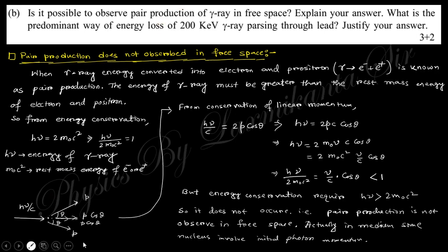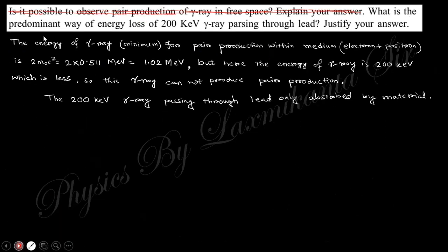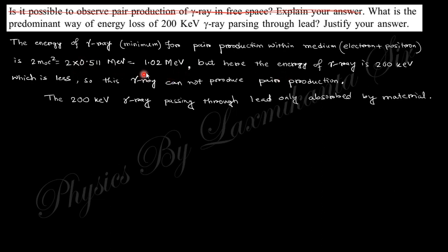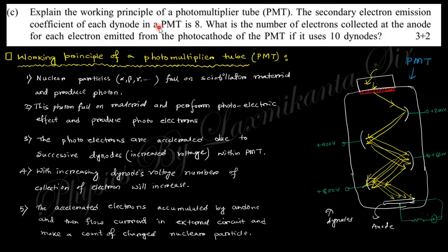The next part asks: what is the prominent interaction for a 200 keV gamma ray passing through lead? For pair production, the minimum energy required is 2m₀c² ≈ 1.02 MeV. Since 200 keV is much less than 1.02 MeV, pair production does not occur. The 200 keV gamma ray is instead absorbed by the lead.